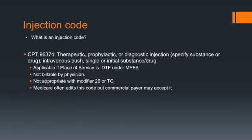An injection code is used to bill for intravenous therapeutic, prophylactic, or diagnostic injection of a single substance or drug. It is only applicable if the place of service is an independent diagnostic testing facility under the Medicare Payment Fee Schedule. The injection code is CPT 96374. It is not billable by physicians and is not appropriate with modifier 26 or technical component. Medicare often edits this code, but commercial payers may accept it.